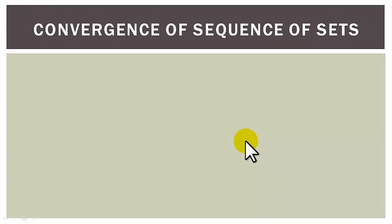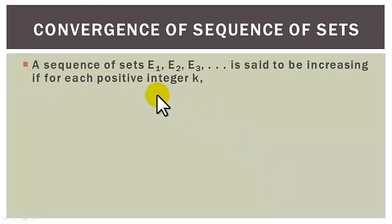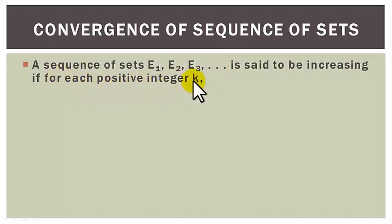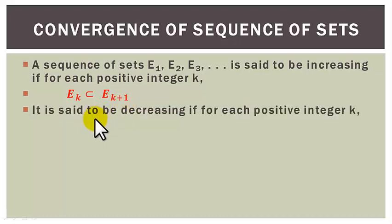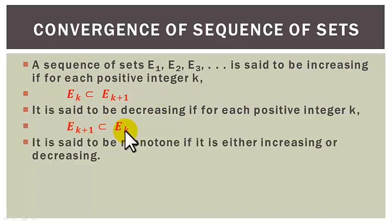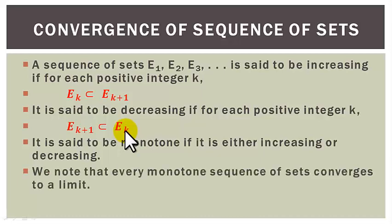Convergence of sequences of sets. A sequence of sets E1, E2, E3 and so on is said to be an increasing sequence if for each positive integer k, Ek is a subset of E(k+1). The sequence is said to be a decreasing sequence if for each positive integer k, E(k+1) is a subset of Ek. The sequence is said to be monotone if it is either an increasing or a decreasing sequence. We note that every monotone sequence of sets converges to a limit.